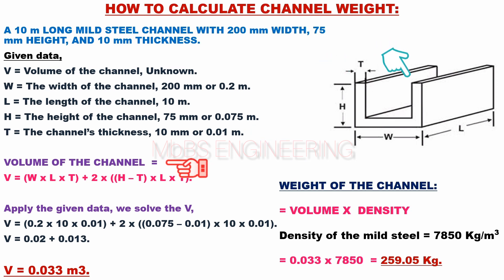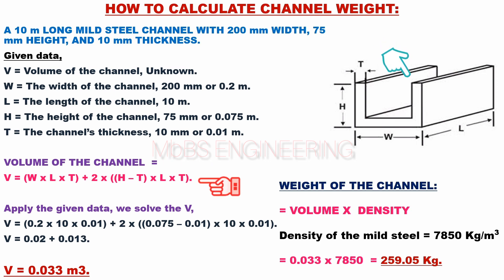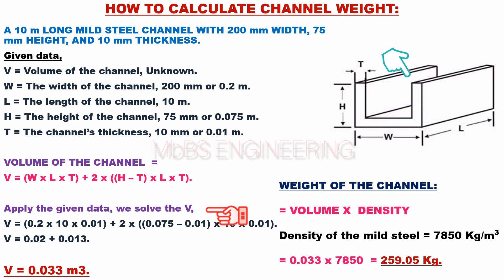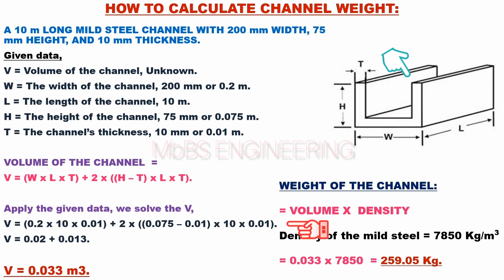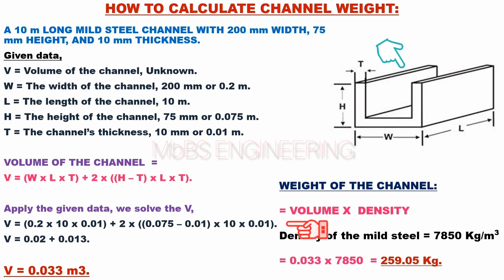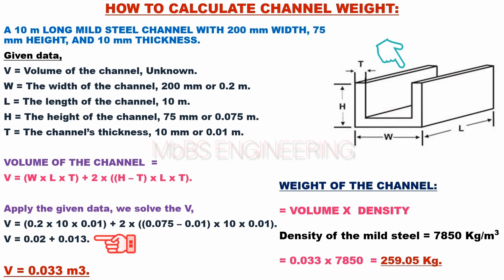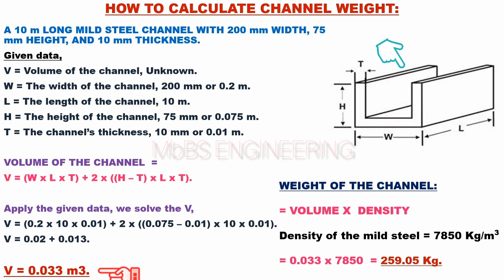We calculate the volume of the channel. V equals W into L into T, plus 2 multiplied by (H minus T) into L into T. Applying the given data: V equals 0.2 into 10 into 0.01, plus 2 multiplied by (0.075 minus 0.01) into 10 into 0.01. This gives V equals 0.02 plus 0.013. Therefore, V equals 0.033 cubic meters. The volume of the channel is 0.033 cubic meters.